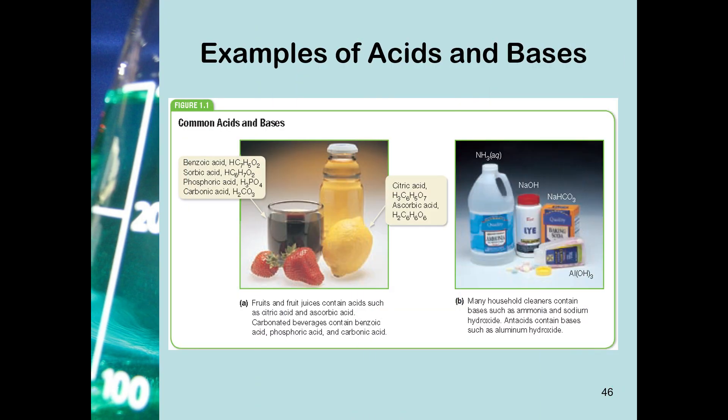Here we have some example acids and bases. Over on the left we have the acids: benzoic acid, ascorbic acid, phosphoric acid, and carbonic acid — the bottom two are common ingredients in pop. In the middle, citric acid and ascorbic acid are both found in citrus fruit.